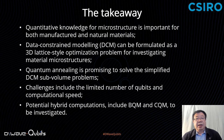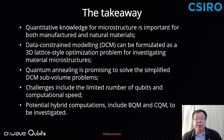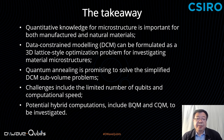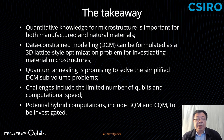Finally, the takeaway messages: quantitative knowledge of microstructure is important for both manufactured and naturally occurring materials. Quantitative modeling or DCM can be formulated as a 3D lattice-style optimization problem for investigating material microstructures. Quantum annealing is promising for solving simplified DCM sub-volume problems; challenges include limited number of qubits and computational speed. Potential hybrid computations including BQM and CQM are to be investigated. Thank you for your attention and thanks for having us.